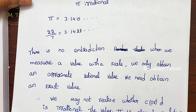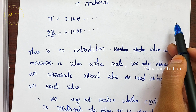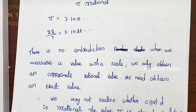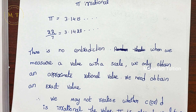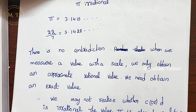When we measure a value with a scale, we only obtain an approximate rational value, not an exact value. So if C and D are measured, pi is only approximately equal to 22 by 7. C and D yield an irrational number. So this resolves the contradiction.